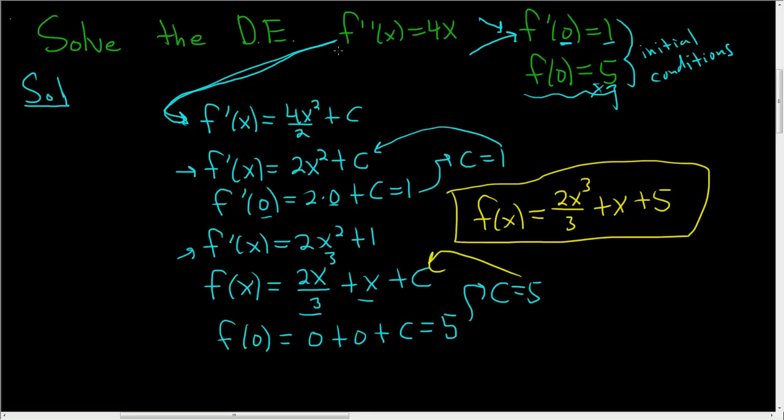So the first step is you have this second derivative here, you integrate it and you get the first derivative. So we did that and here's the first derivative. Now we have to find c. So to find c, you use this condition here. You just replace x with 0 and set it equal to 1. We did that here. Here's c equals 1. Then you plug it back in.